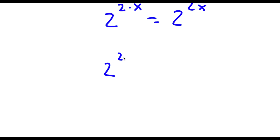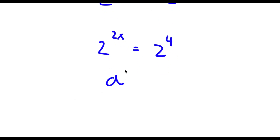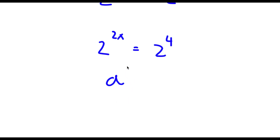So now I have 2 to the power of 2x is equal to 2 to the power of 4. Now if I have something in the form a to the power of m is equal to a to the power of n, this means that m is equal to n.